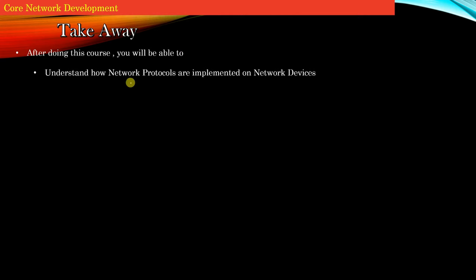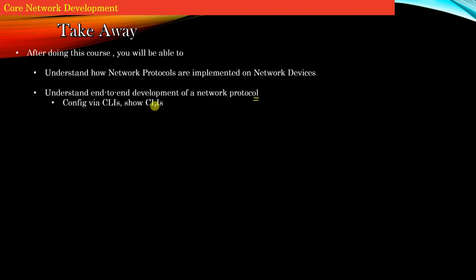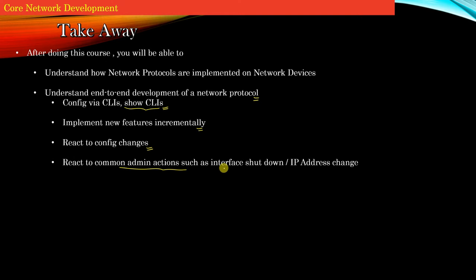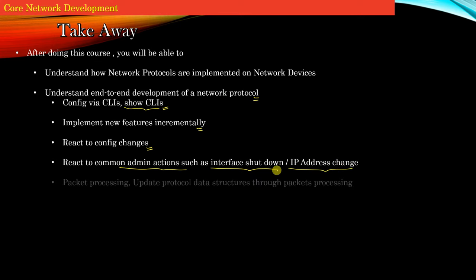After doing this course you will be able to understand how network protocols are implemented on a network device, and understand end-to-end development of a network protocol. A typical implementation involves many things — for example, you would have to write various command line interfaces to configure your protocol, as well as show CLIs to display the protocol state. In typical protocol development, engineers implement new features incrementally. Your protocol must react to configuration changes done by the administrator through CLIs, react to admin actions such as shutting down an interface or changing the IP address of a device, and perform packet processing and update protocol data structures.